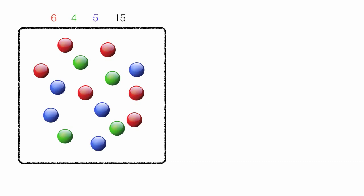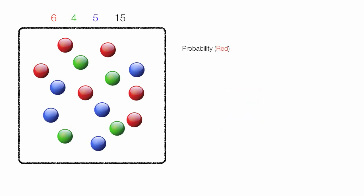What is the probability to pick a red marble, a green marble, and a blue marble in that order with replacement? The probability of a red marble is equal to the total number of red out of the total, which is equal to six red marbles out of 15 total, which is equal to 0.40.